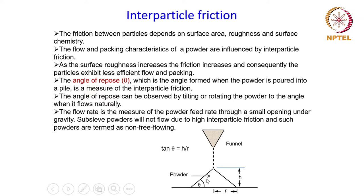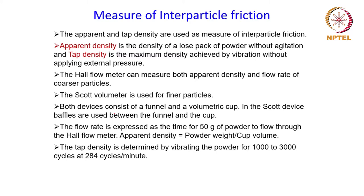To measure the angle of repose, you need to know the height of the heap or pyramid which the powder makes without any agitation, and the radial distance r. From that you calculate tan θ, and you get an idea about the angle of repose for any given powder. Let us now see how experimentally the interparticle friction can be measured and in what way it is reflected.